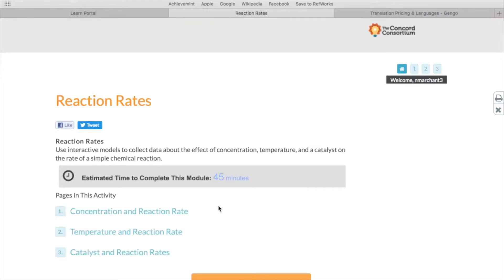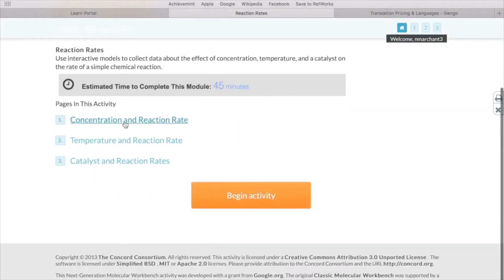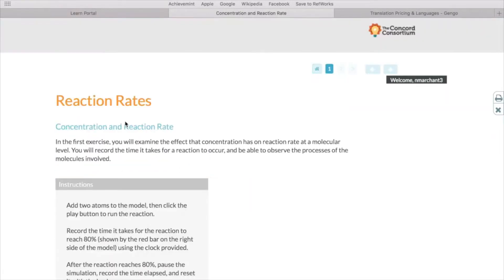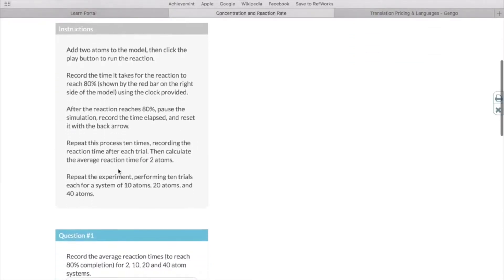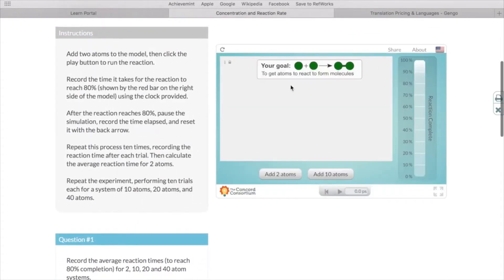You'll click on run activity and the first page will be about concentration and reaction rate. I'm just going to show you how this model works so that you'll have a sense of what you have to do in the experiment. At the bottom of the simulation you can add atoms, so for example you can add two atoms or four atoms by clicking again. If you want to reset it you use this reset button. I'm going to start with two atoms.